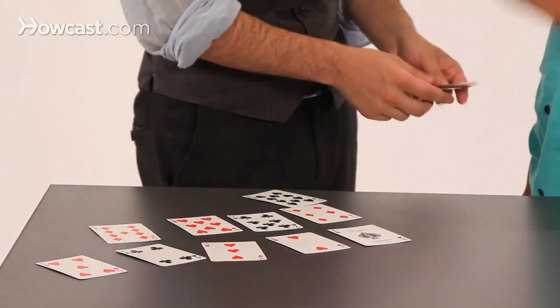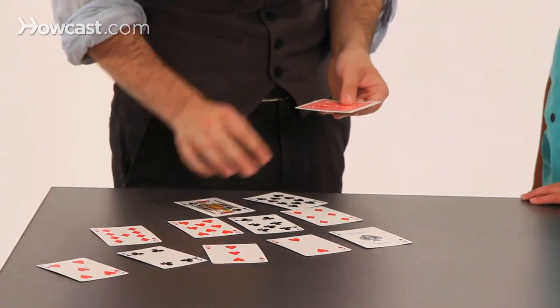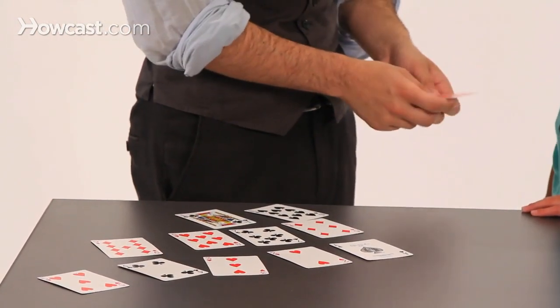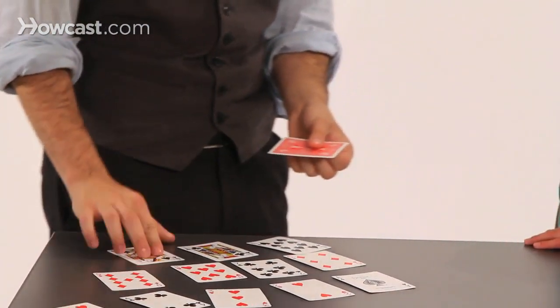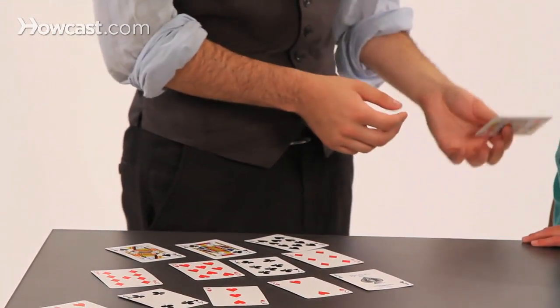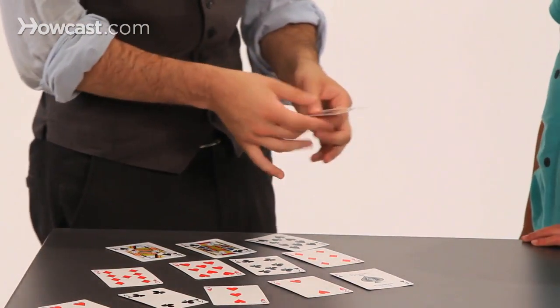J, A, C, K. Q, U, E, E, N. And of course, K, I, N, G. And that's the world's greatest spelling trick.